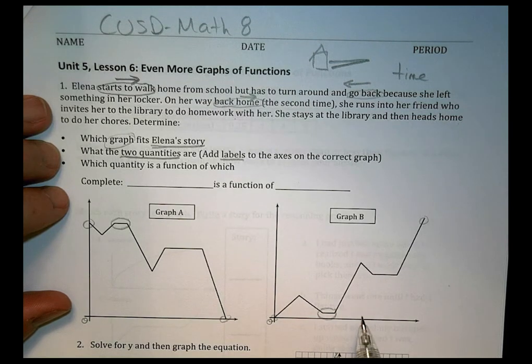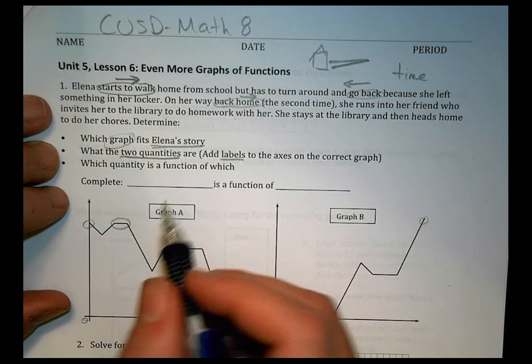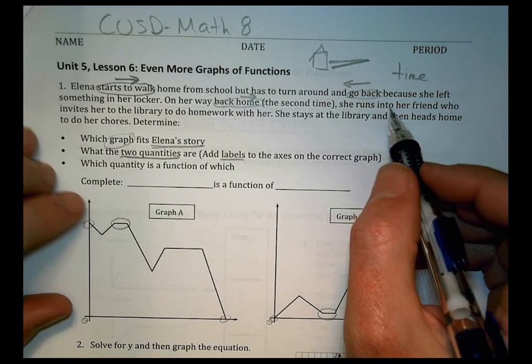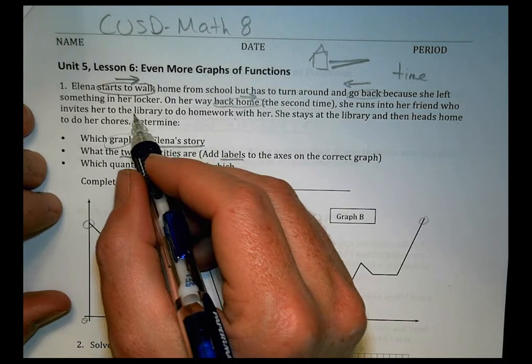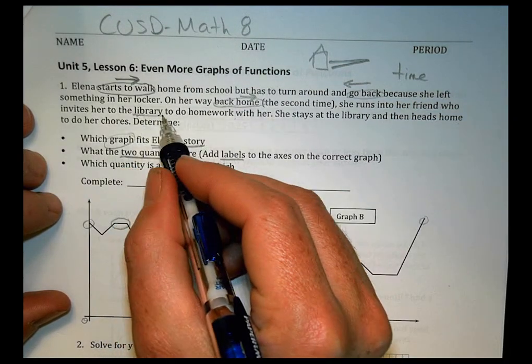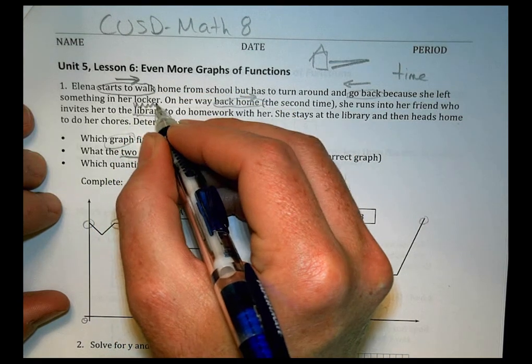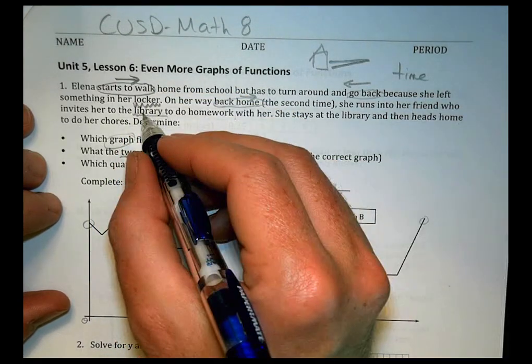What's interesting here is both of them have a little spot where not much is happening. Well, that not much happening probably is going to be where what? She's back at school, in her locker, looking for something. She runs into her friend as she's walking back home, and they decide to go to the library to do some homework.